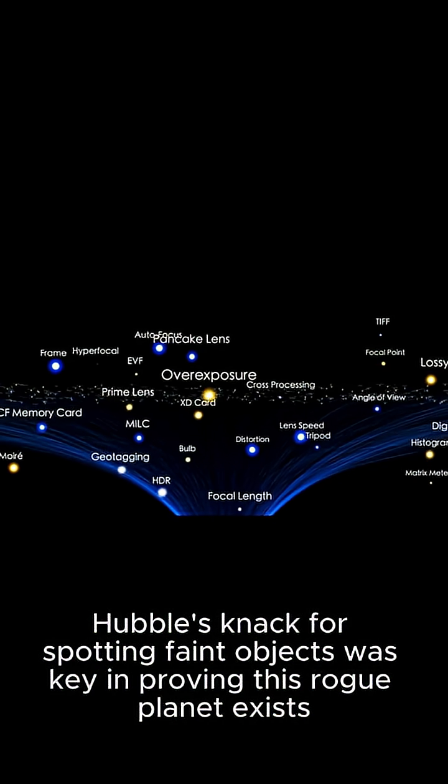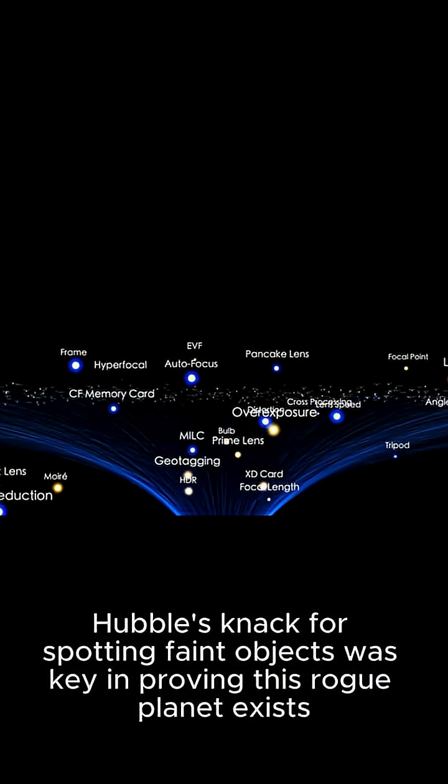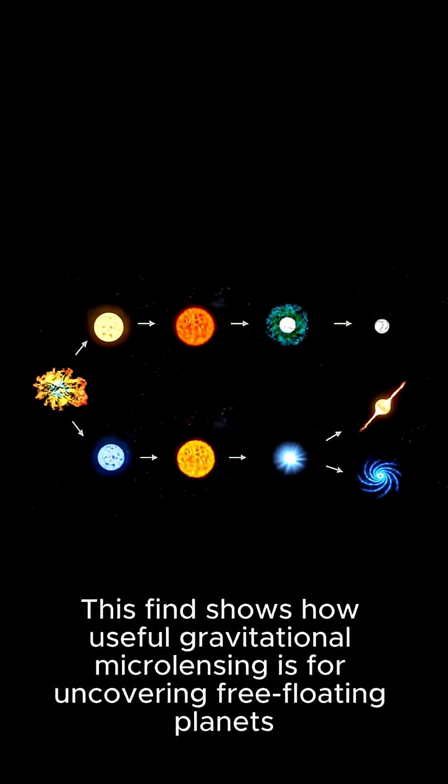Hubble's knack for spotting faint objects was key in proving this rogue planet exists. This find shows how useful gravitational microlensing is for uncovering free-floating planets.